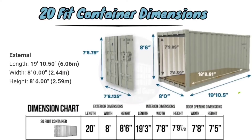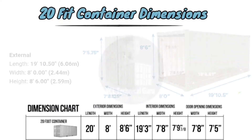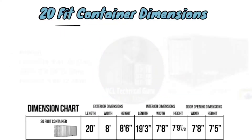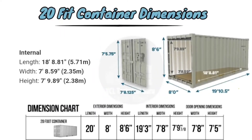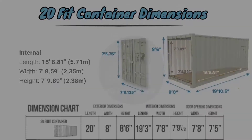External door dimensions are: width 7 feet 8 inches and height 7 feet 5 inches. Internal dimensions are: length 18 feet and 8 inches, width 7 feet and 8 inches, height 7 feet and 9 inches. Door dimensions are the same.